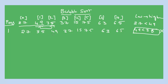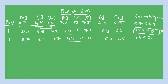Still in the first pass, compare 49 and 37. The condition is false, so swap again. The array becomes: 27, 35, 37, 49, 15, 75, 63, 65. Now compare 49 and 15 — condition is false, so bubble these two values. After the swap: 27, 35, 37, 15, 49, 75, 63, 65. Compare 49 and 75 — condition is true.